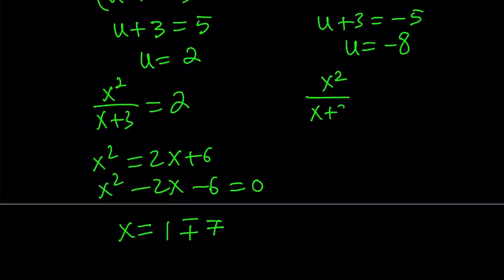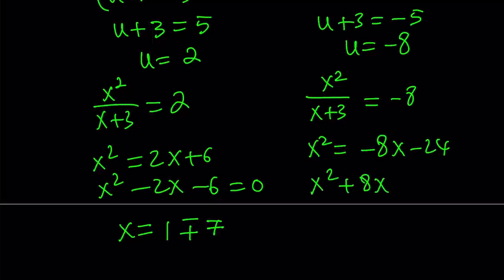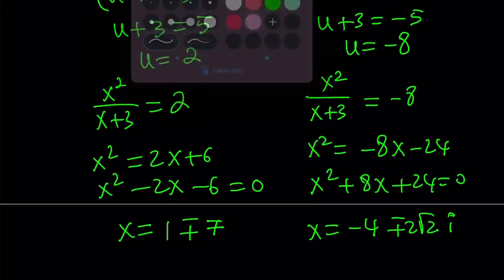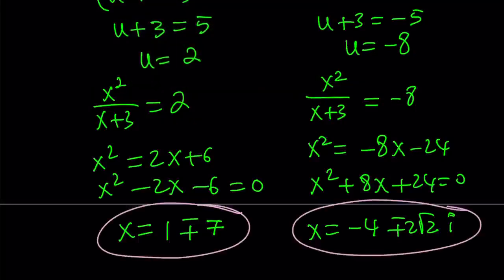So this can also equal negative 8. This gives us something that is not real. The solutions are not going to be real because if you put everything on the same side, you're going to notice that we get a negative discriminant. But if you were to solve this, you would get the following — the solutions are going to be non-real complex: x equals negative 4 plus or minus 2 root 2 multiplied by i. So we got 4 solutions. Obviously that makes sense because this is a quartic equation, so we should be getting 4 solutions. But 2 of them are not real. And we'll talk about that later.